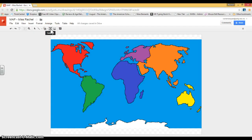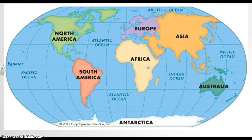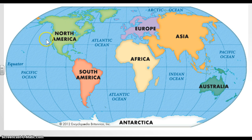Now that I've clicked on the text box, I can click on top of one of the continents. We are going to start with North America. Here I have it spelled, and we're going to spell it correctly. If you need to look at the board or look at the video again, let's make sure we do that correctly.